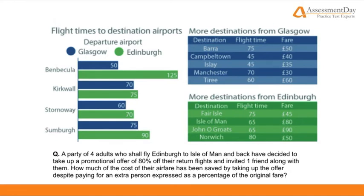A party of four adults who shall fly Edinburgh to Isle of Man and back have decided to take up a promotional offer of 80% off their return flights, and invited one friend along with them. How much of the cost of their airfare has been saved by taking up the offer, despite paying for an extra person, expressed as a percentage of the original fare?